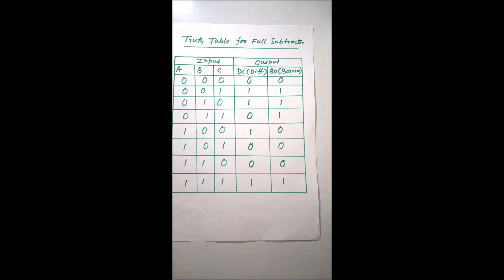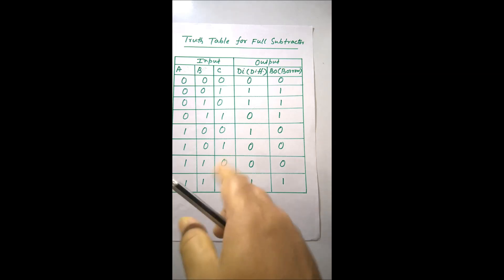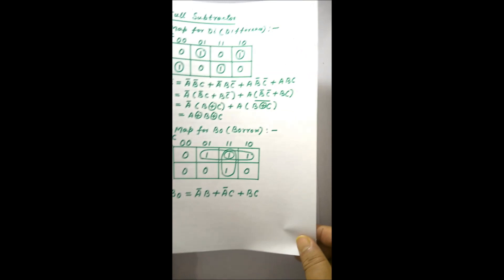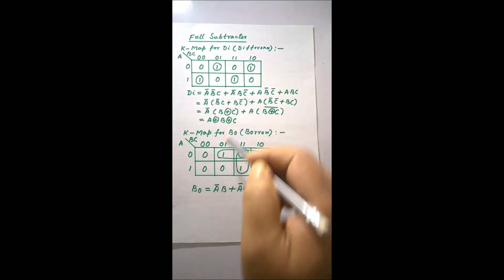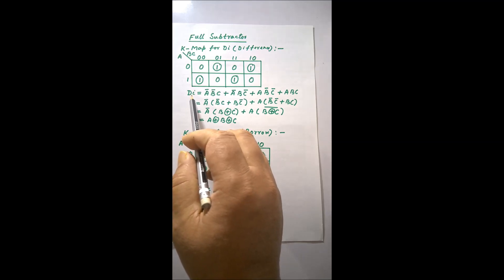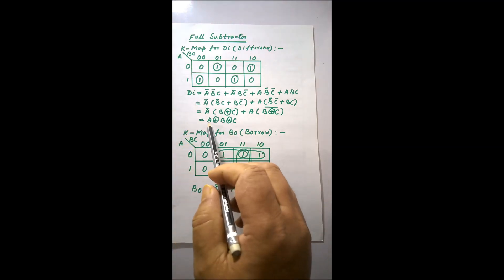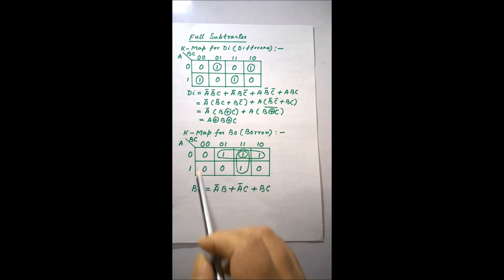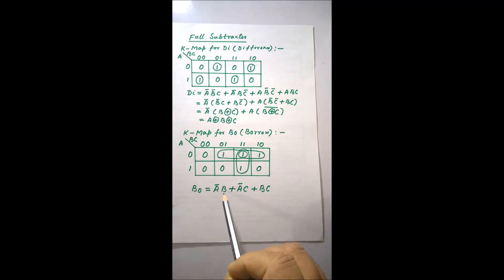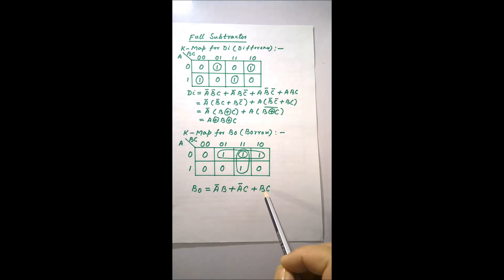To do that we use the K-map, and from the truth table we are constructing the K-map. You can see the simplification shown here. Therefore, Difference equals A XOR B XOR C, and Borrow equals complement of A into B, plus complement of A into C, plus B into C.